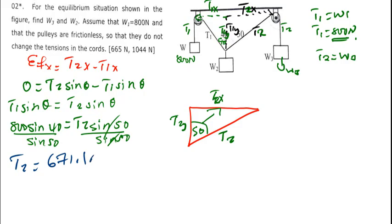Now for me to find the other one, the W2, so now T1 is the same as it, so meaning that W3 is now 671.1 Newtons, it's basically the same thing.